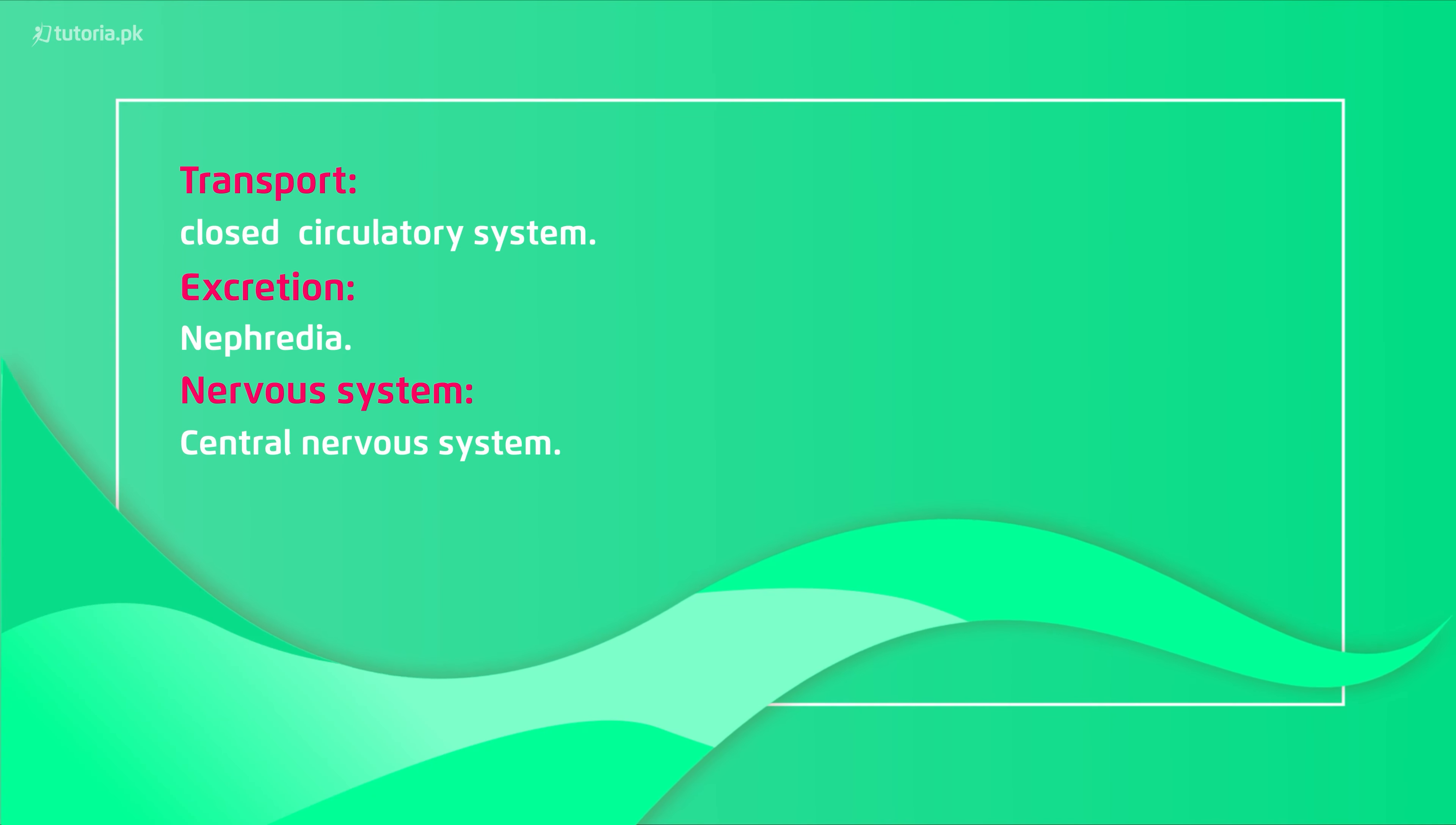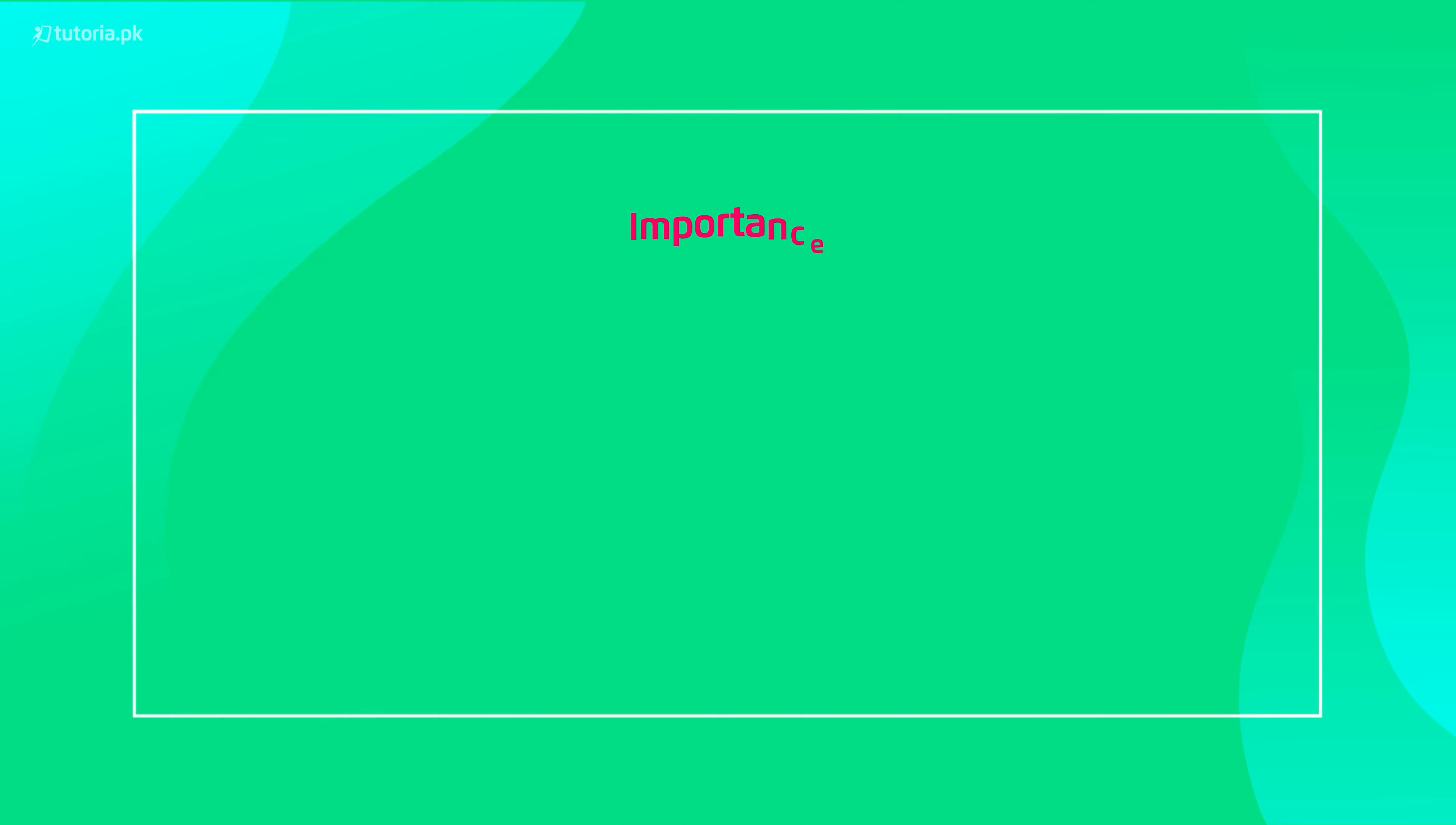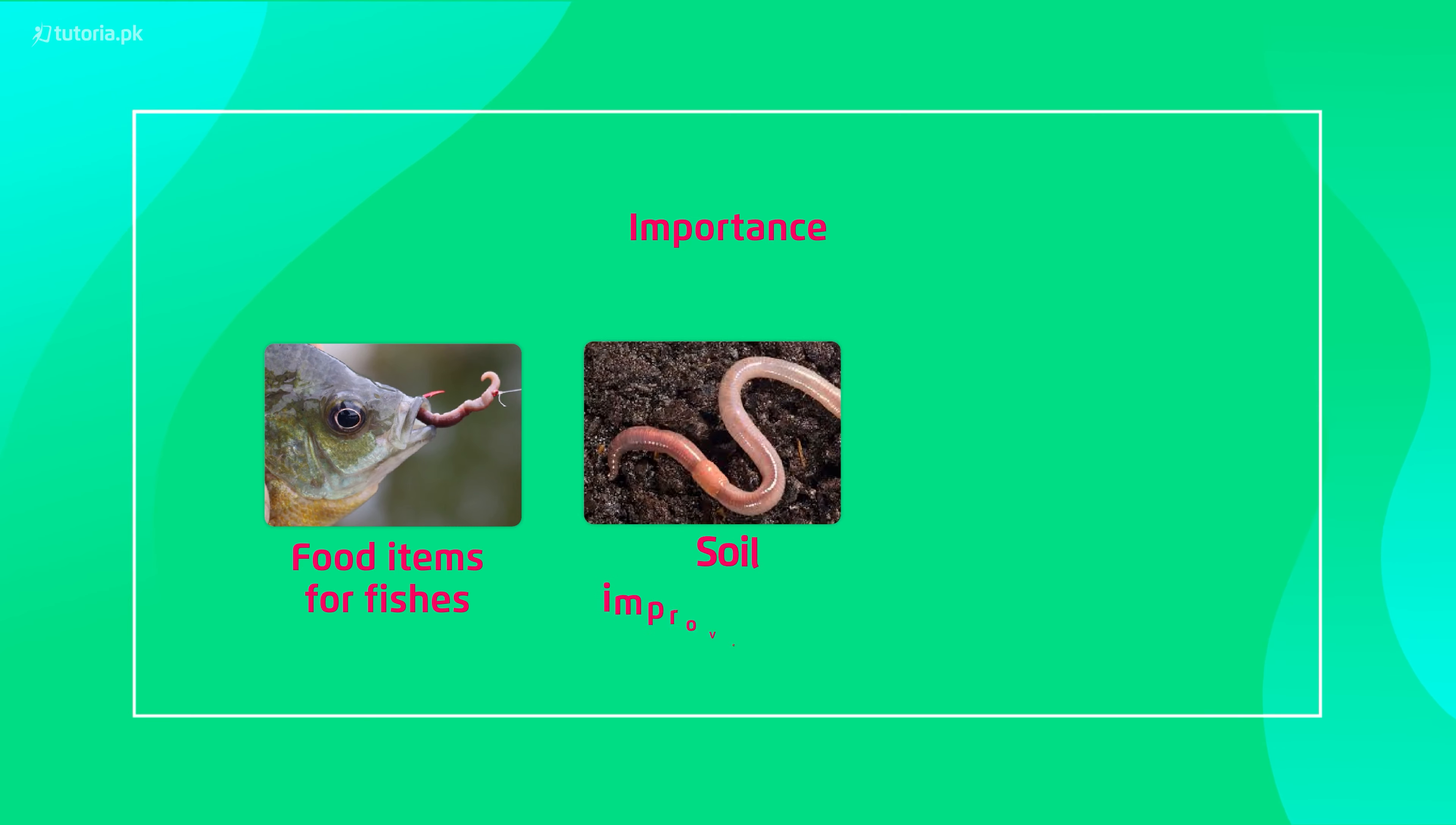If we talk about the importance, again, we use these worms as a bait when we have to catch fish. Earthworms are the best friends of farmers because when they move from one part to another part, they rotate the soil itself. That's why the nutrients are recycled and moved, and the soil improvement is easily increased.